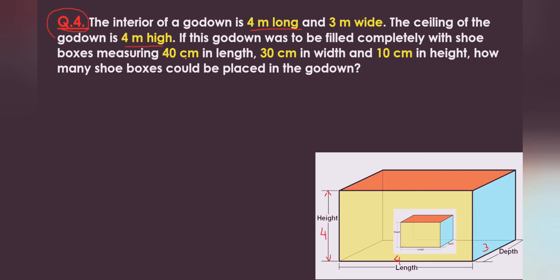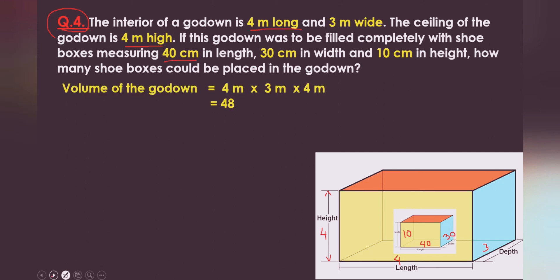If this godown is to be filled completely with shoe boxes measuring 40 cm long, 30 cm wide, and 10 cm in height, how many shoe boxes could be placed in the godown? The formula is: volume of the godown equals length times width times height.